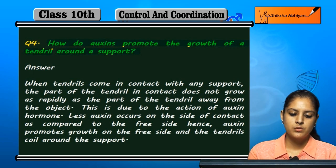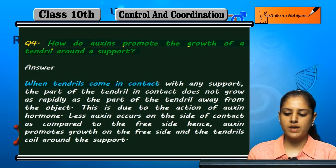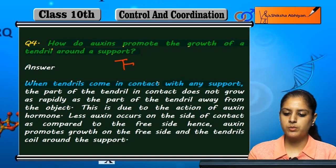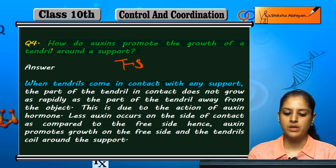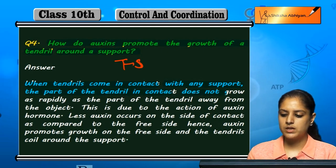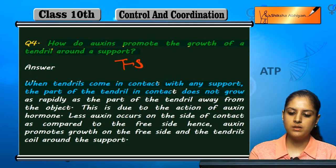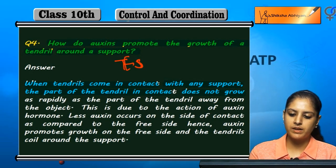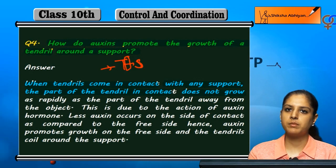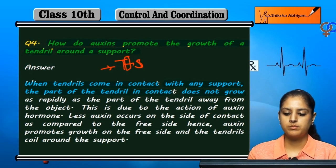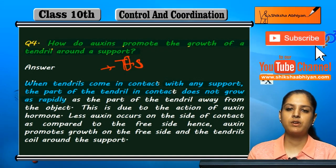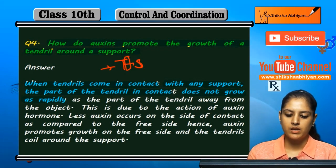When tendrils come in contact with any support — agar tendril hai aur woh kisi support ke contact me a jate hai — the part of the tendril in contact does not grow rapidly. You can see: joh part contact me hai woh bilkul rapidly grow nahi karega.